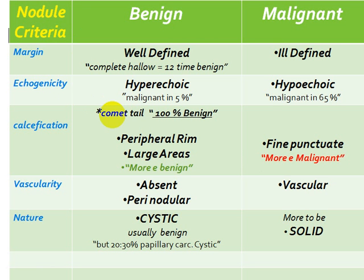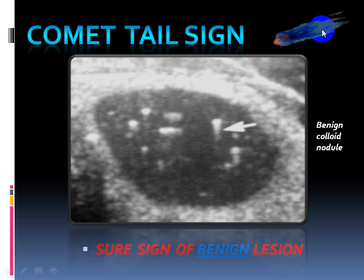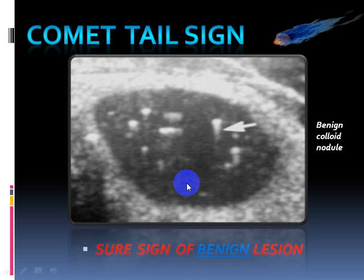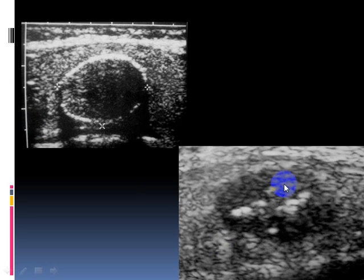When evaluating a nodule in the thyroid, I must evaluate all these items and form my diagnosis according to each one. Let us see the application of these topics on ultrasound images. This is the comet tail sign — a focal calcification with a tail behind it. This sign means the nodule is 100% benign — a sure sign of a benign lesion.